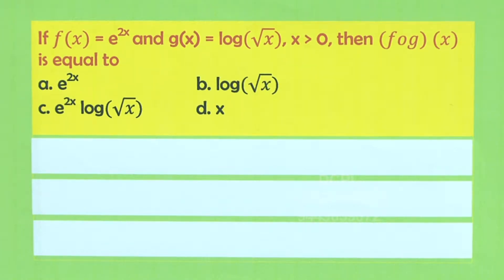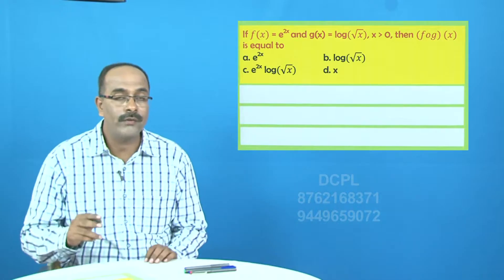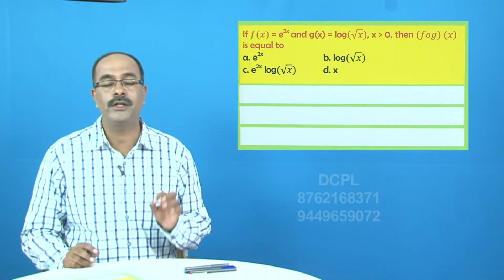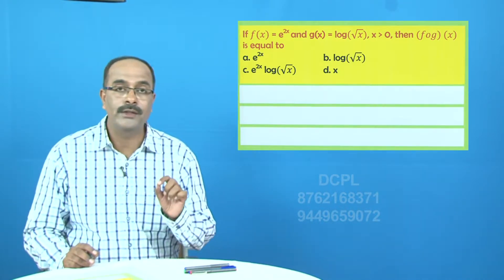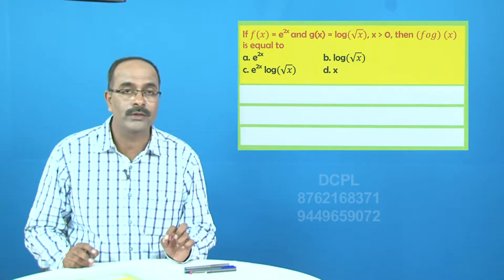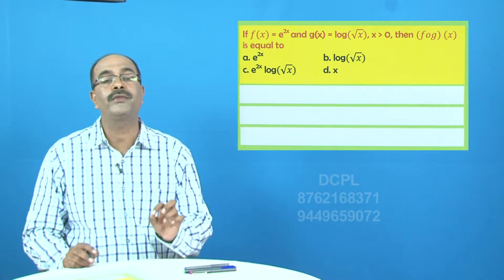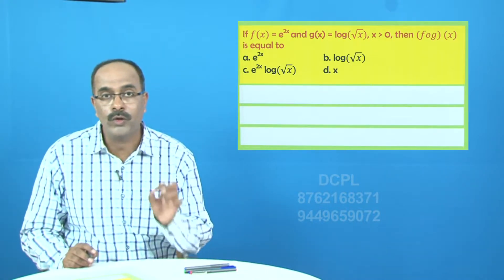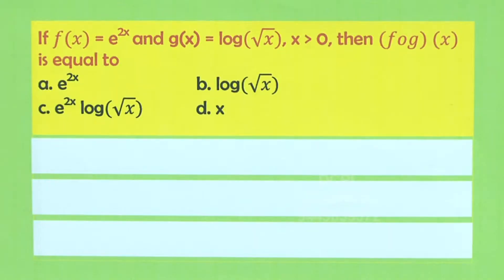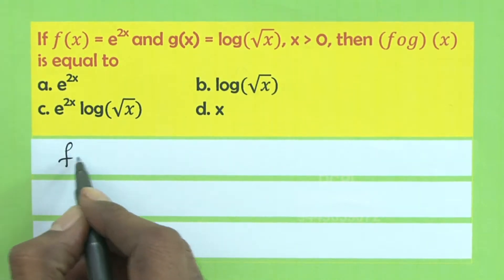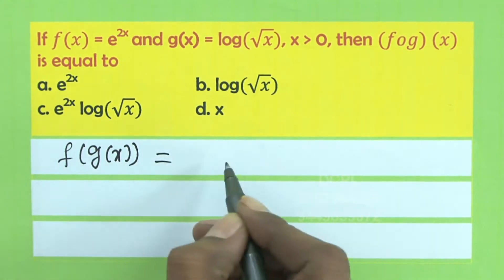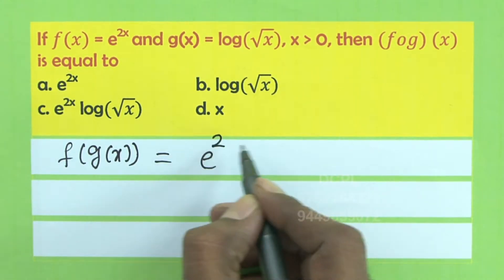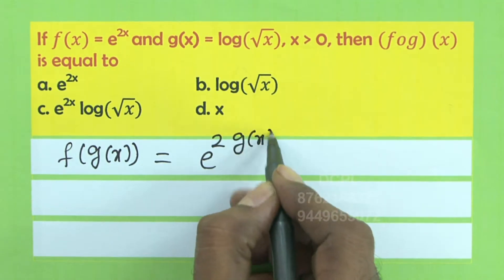f(x) = e^(2x) and g(x) = log√x. What is f(g(x))? Since f(x) = e^(2x), we can write f(g(x)) = e^(2·g(x)). So f(g(x)) is equal to e raised to 2 times g(x).